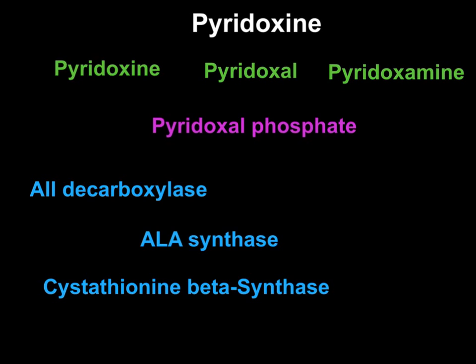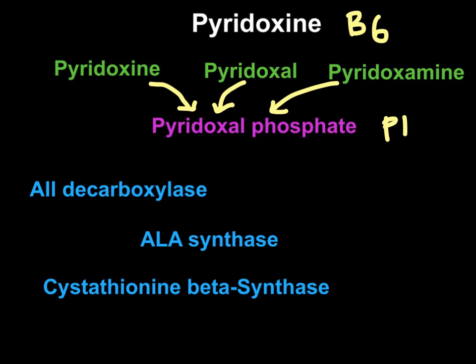Hello everyone, Dr. Mungli here. In this video I will be doing a high-yield review for pyridoxin, which is referred to as vitamin B6. There are three forms of pyridoxin: pyridoxin itself, pyridoxal (the aldehyde form), and pyridoxamine (the amino form). All of them in our body are converted into their active form, pyridoxal phosphate, simply referred to as PLP.